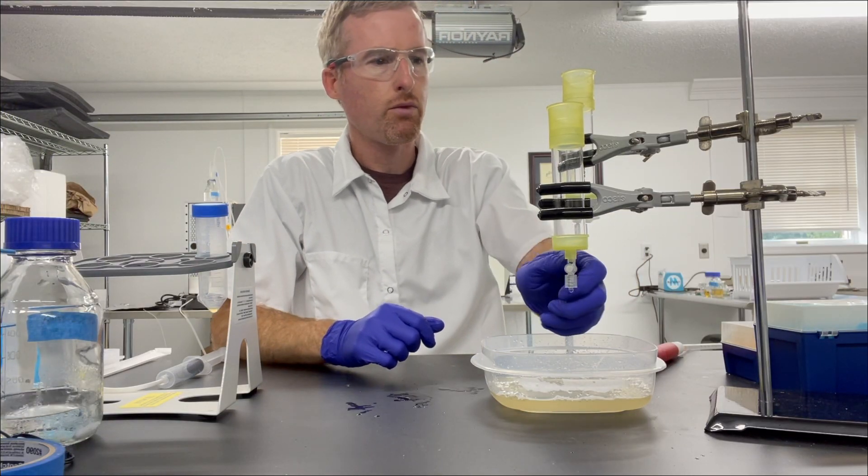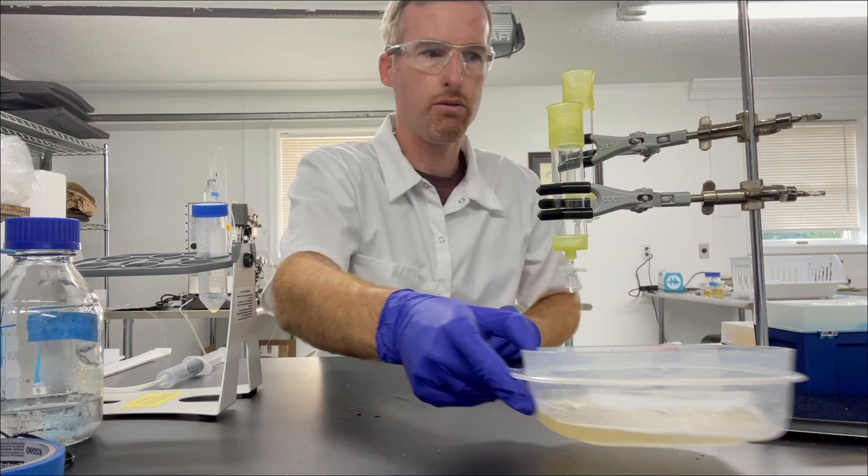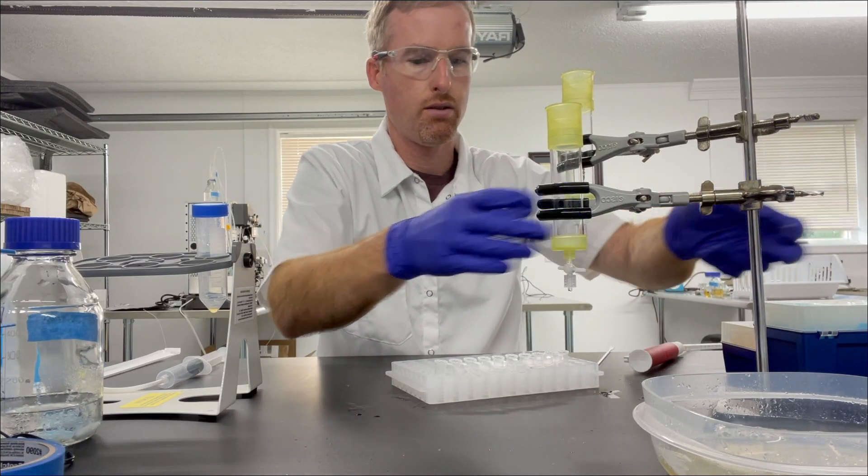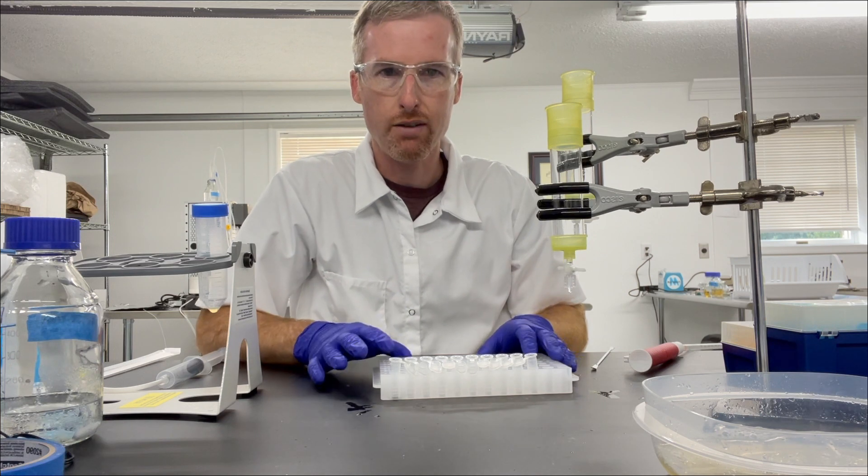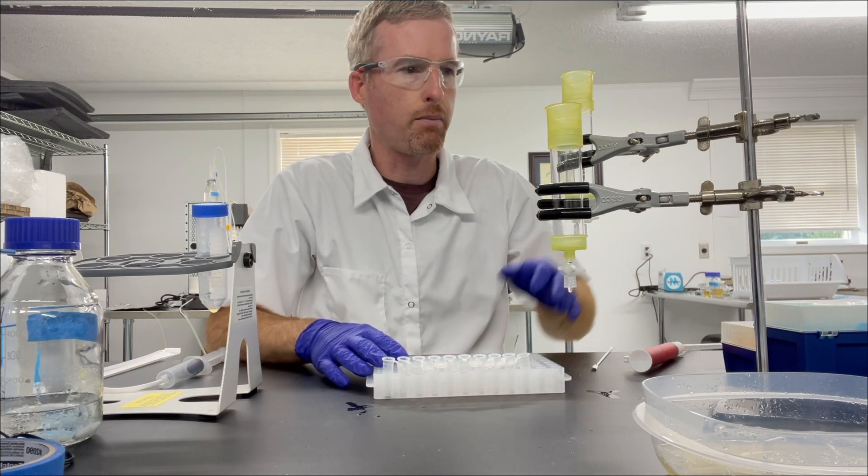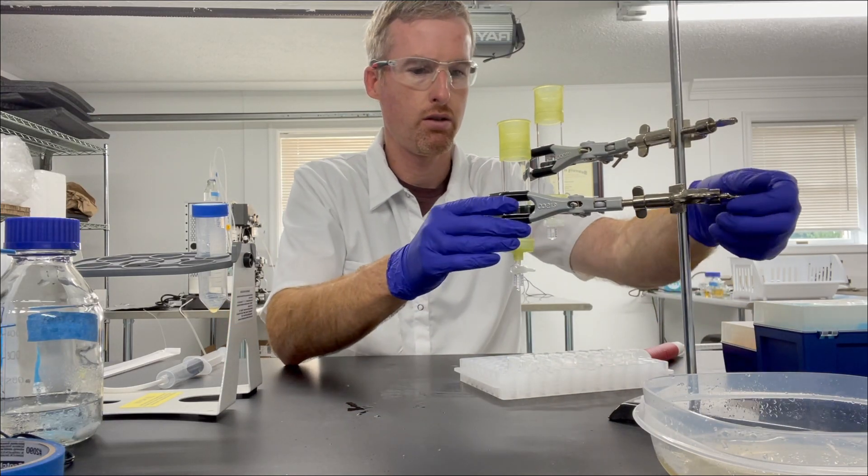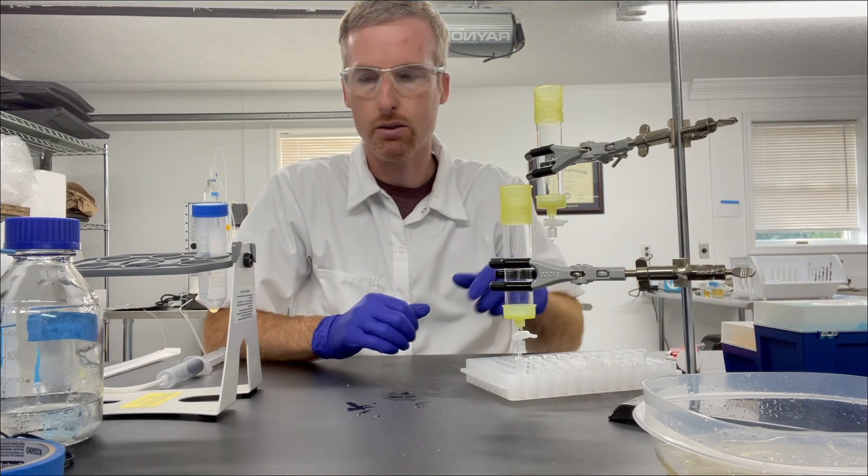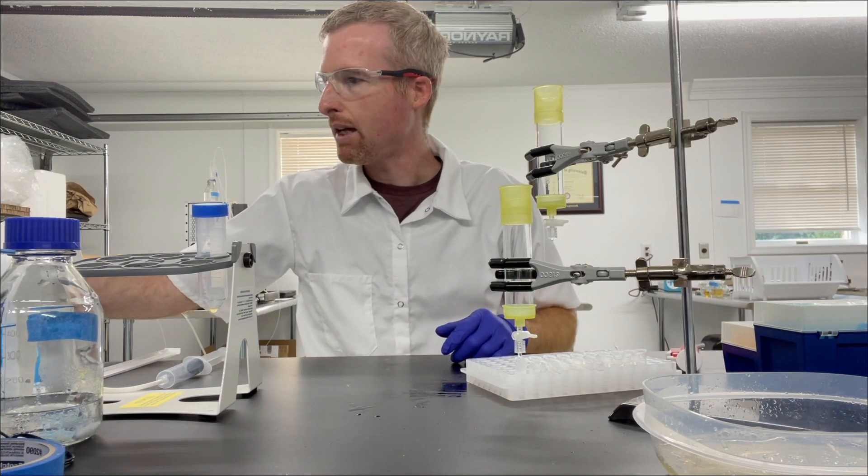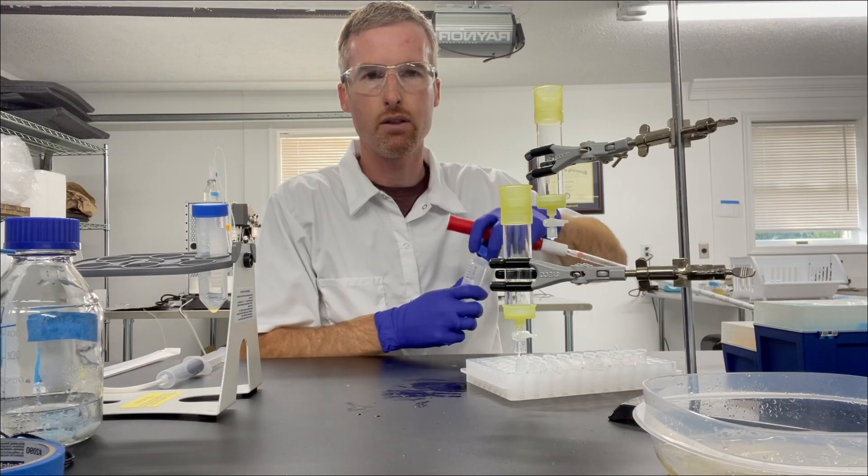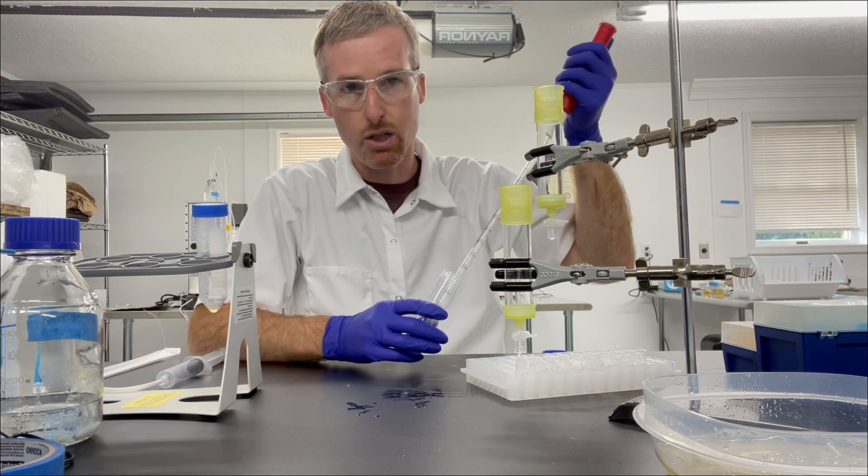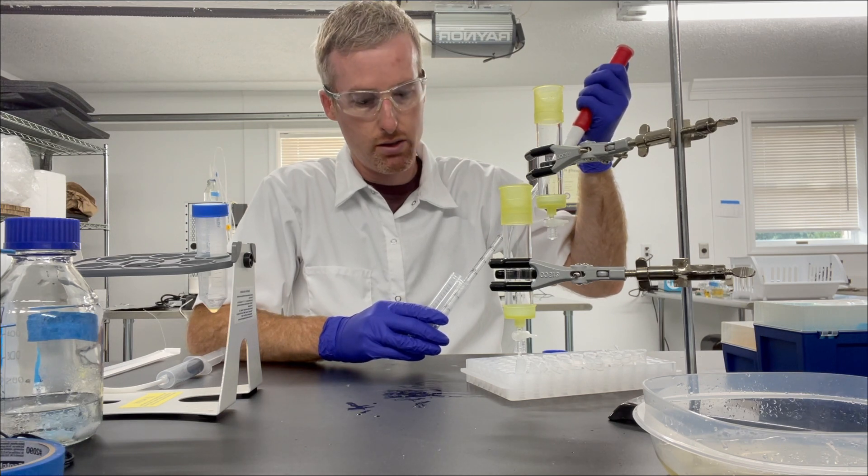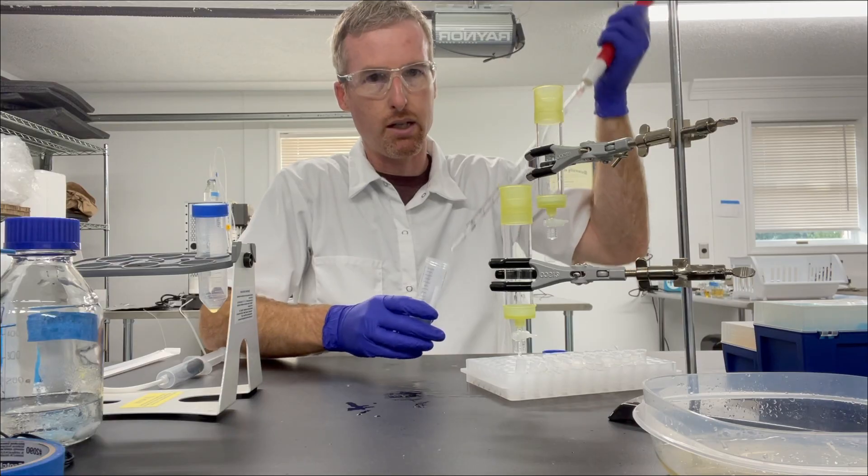And now what I'm going to do is elute the protein. So I have here 10 1.5 ml microfuge tubes, they're labeled 1 to 10, and I'm going to lower the Econo column down until it's right above the tube, turn the stopcock so it's off, and then I'm going to add one milliliter of elution buffer. So elution buffer is just the same as wash buffer except that it has 250 millimolar imidazole added and it's pH'd to pH 8. I'm going to add just one milliliter of elution buffer.